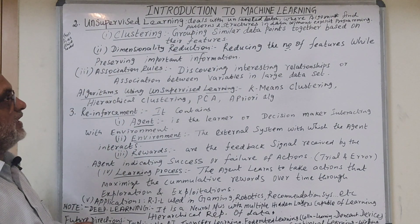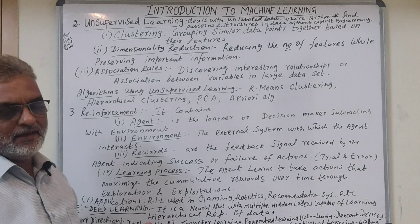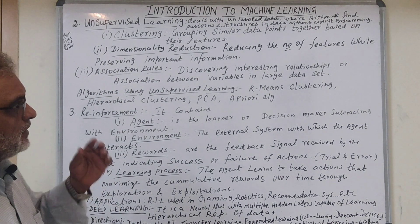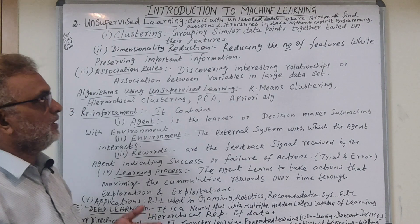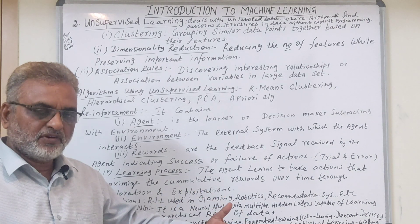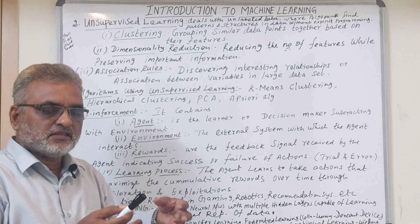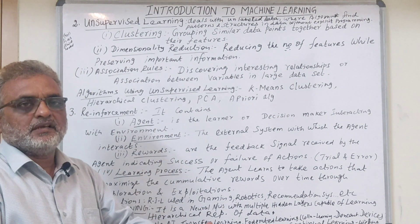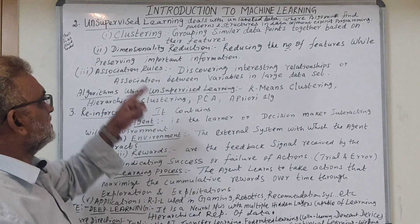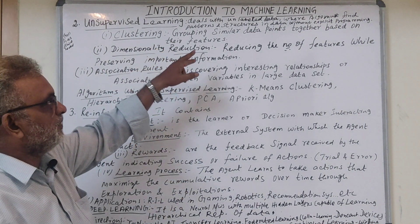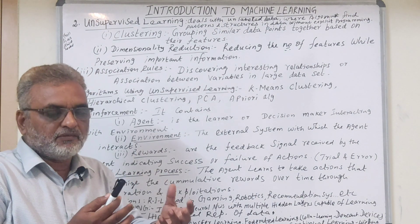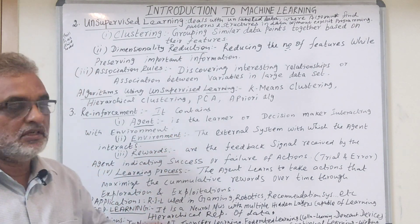Number two is unsupervised learning, which deals with unlabeled data. Data of different types and varieties will be available, where the algorithm must find the patterns and structures in the data without any explicit programming. Normally it has to perform operations such as clustering — grouping of similar data points together based on their features. Data with the same type of features is collected together, and that is what is called clustering.